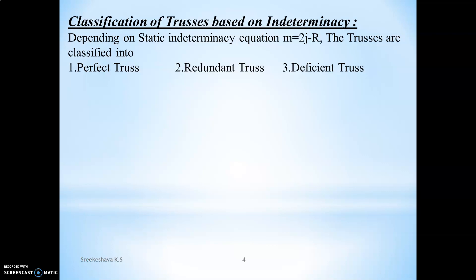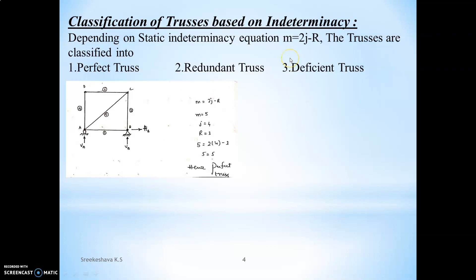The truss can be classified as a perfect truss, redundant truss, or deficient truss. A perfect truss satisfies the equation m equals 2j minus r. Consider an example with 5 members (m=5), 4 joints (a, b, c, d), and 3 external support reactions (roller at a gives 1, hinge at b gives 2). Applying m = 2j - r: 5 = 2(4) - 3 = 5. Since the equation holds, it is a perfect truss, also called a determinate truss.